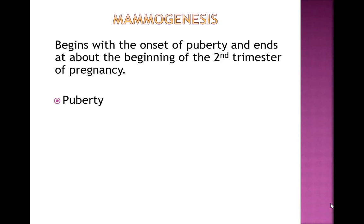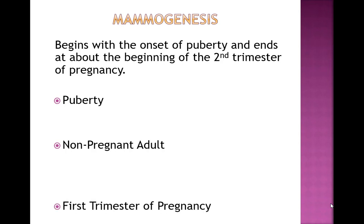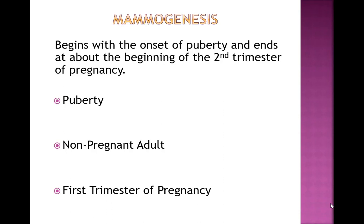We don't see a whole lot of changes in the non-pregnant adult. The only thing that happens is right before the mom gets her period, there might be some breast fullness, because the body is preparing for pregnancy. Once the woman gets her period and there is no pregnancy, the breasts go back to where they were. There are many hormonally-driven changes during the first trimester of pregnancy preparing the body for lactation.